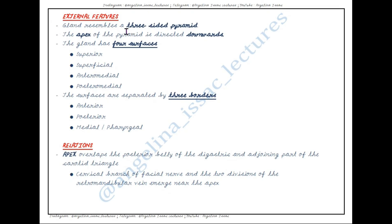To summarize the external features: the gland resembles a three-sided pyramid with the apex directed downwards. It has four surfaces — superior, superficial, anteromedial, and posteromedial — separated by three borders: the anterior border, posterior border, and the medial or pharyngeal border.